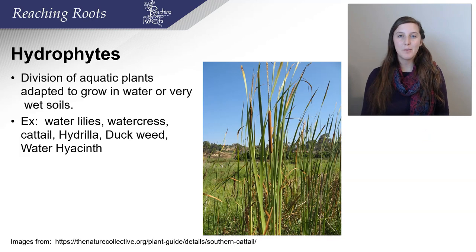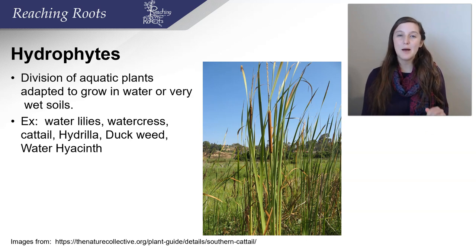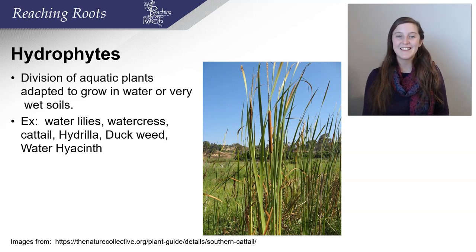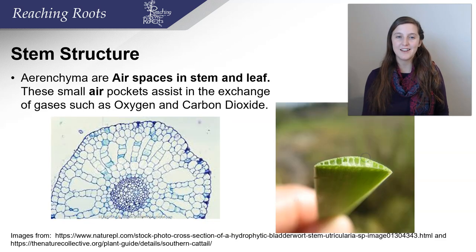There are a lot of different plant adaptations, and different plants have different classifications based on those adaptations. For example, hydrophytes are really good at growing in waterlogged areas. These are a division of aquatic plants adapted to grow in water or very wet soils. Some examples are water lilies, watercress, cattails, and duckweed. Let's take a closer look at cattails' stem structure that allows them to grow in these waterlogged areas.